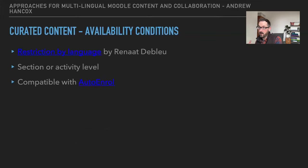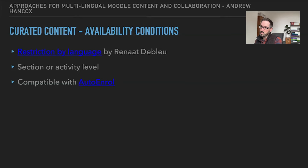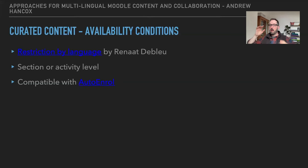The next simplest option is availability conditions — where you have an element that needs translation, you have multiple instances in different languages. You'll have one course with, for example, three different labels with the same content in English, Spanish, and German. You can use Renard Doubler's restriction-by-language plugin to ensure the user sees the one relevant for their language. It gets in the way of reporting on activity completion, but it's easier to manage and more sustainable because all content is in one course.